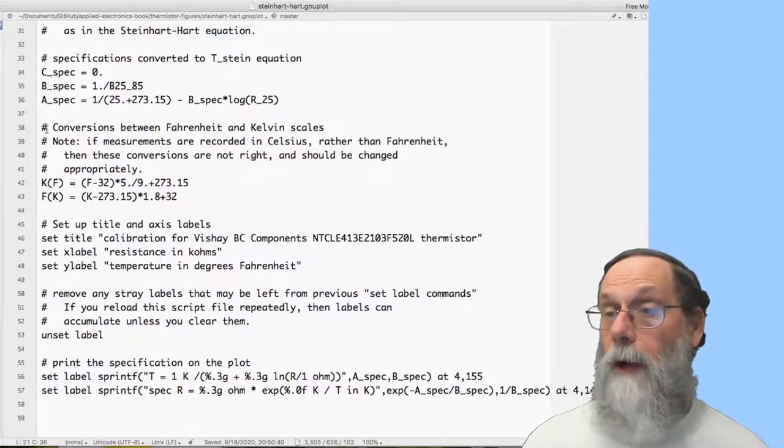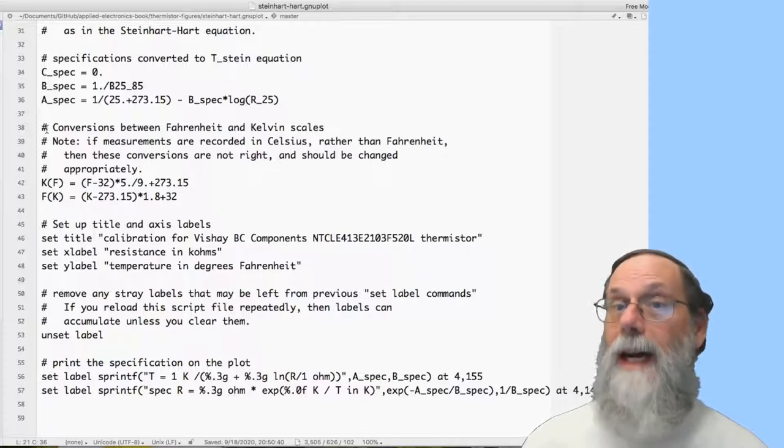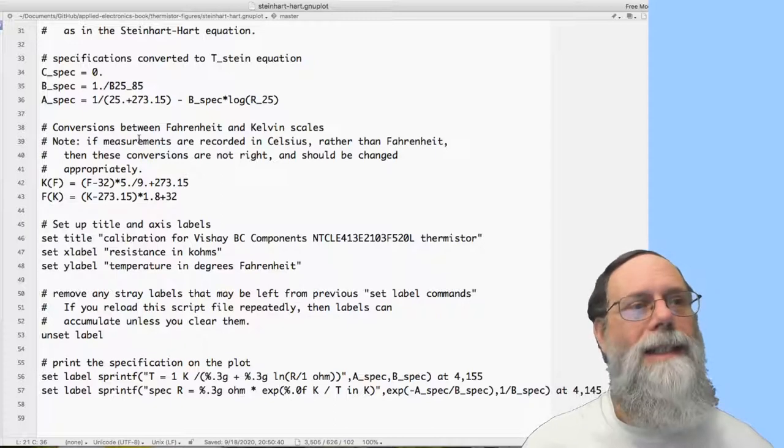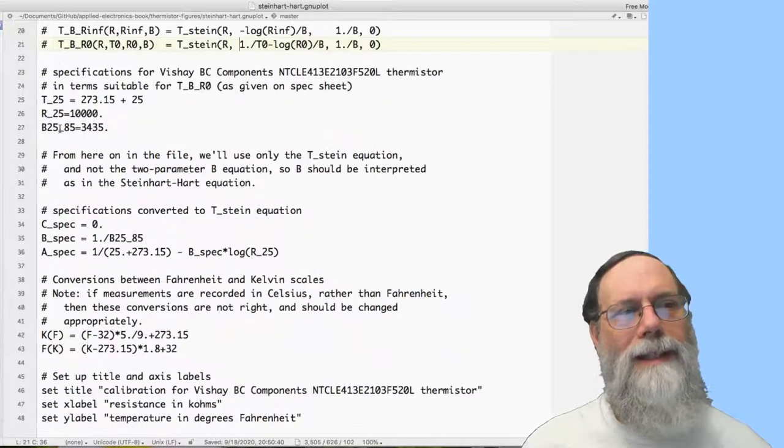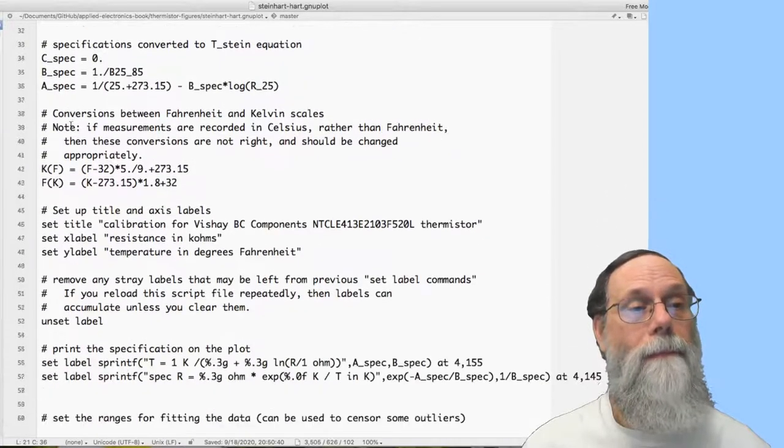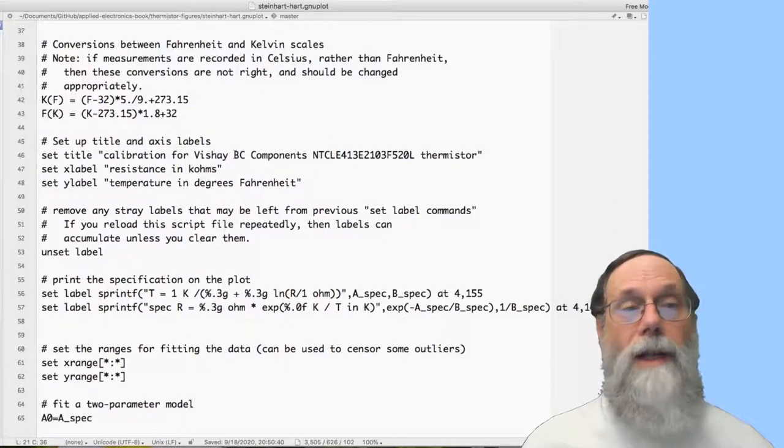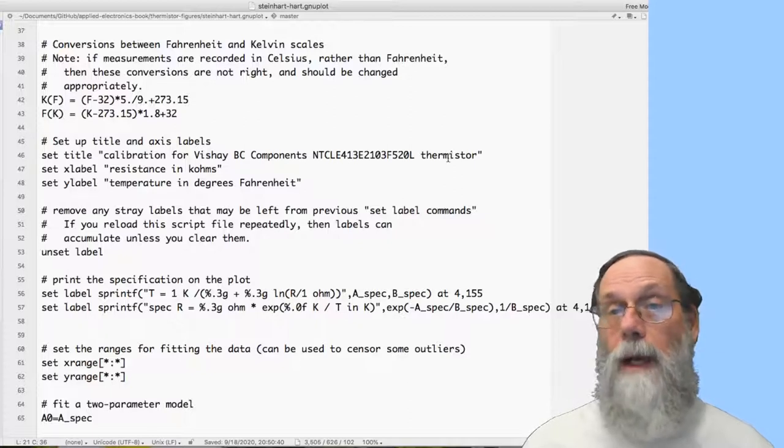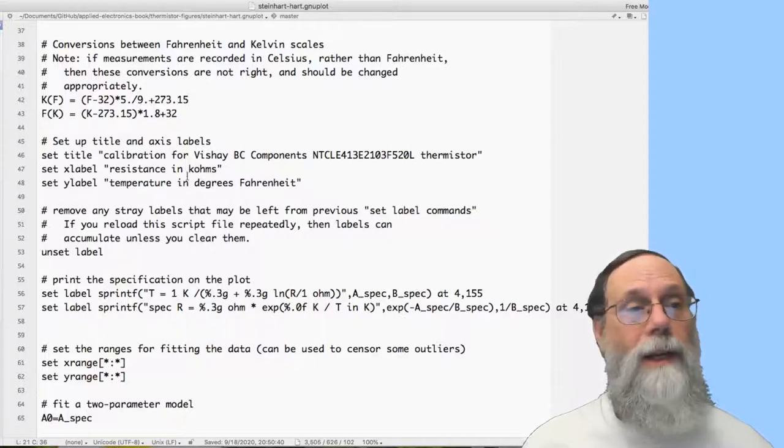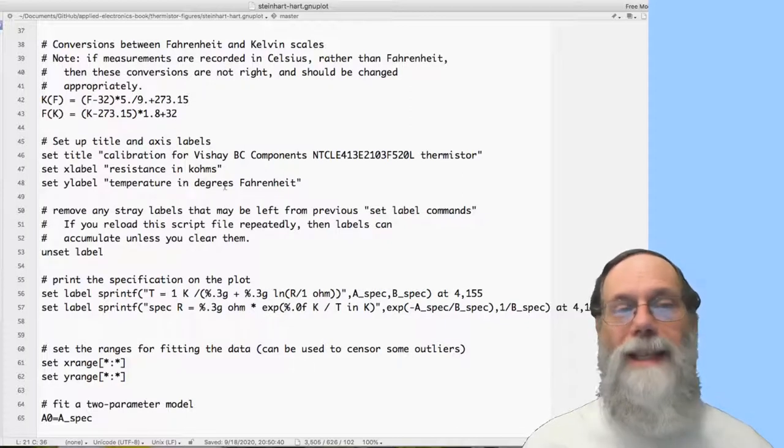So all the things so far, I've just been defining functions. I've not provided any data. I've not done anything except for provide functions. One minor thing, I did define some constants, the constants that came from the data sheet. Here I set up the title that goes at the top of the plot. I set up the x label, and I set up the y label. Here I've said in kilo ohms and in degrees Fahrenheit.